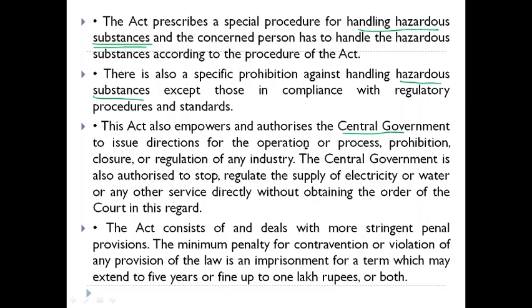This act also empowers and authorizes the central government to issue directions for the operation, prohibition, closure, or regulation of any industry. The central government can take actions against an industry in the context of environmental pollution. It is authorized to stop or regulate the supply of electricity, water, or any other service directly, without obtaining an order of a court. The government can take action on its own without consulting a court in matters of environmental pollution.